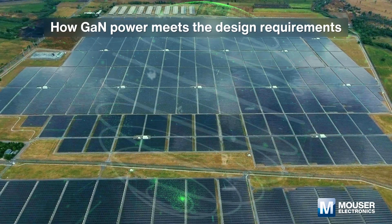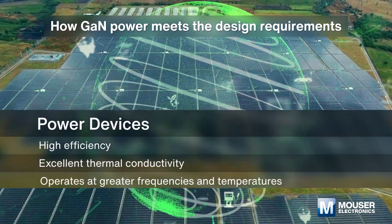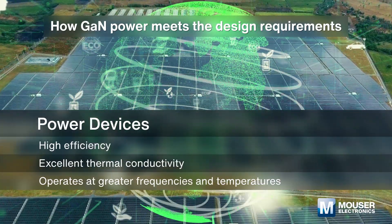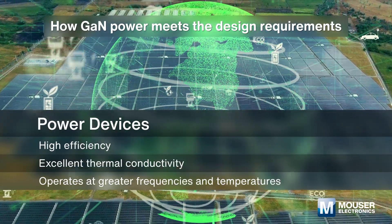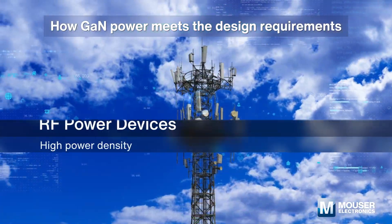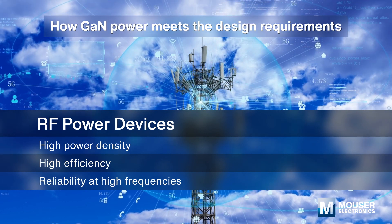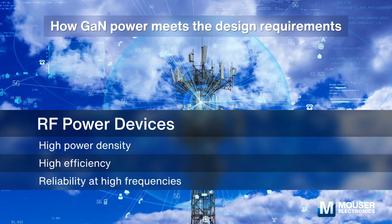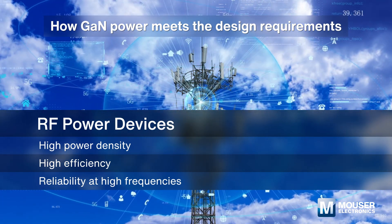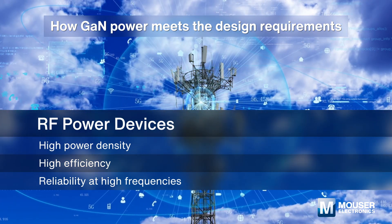In terms of device types, GaN power devices specialize in applications that demand efficient power conversion and management. GaN RF power devices, on the other hand, are used in applications that require the generation and management of high-frequency signals.